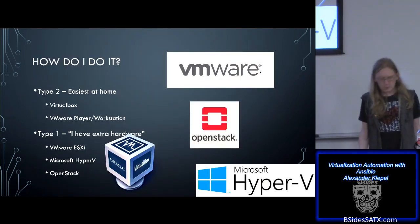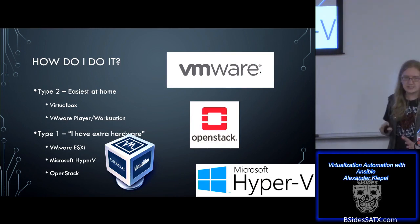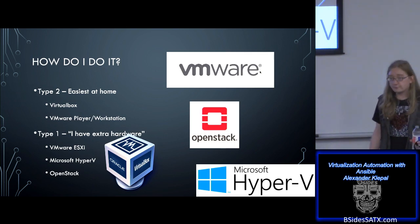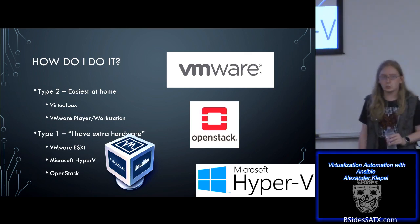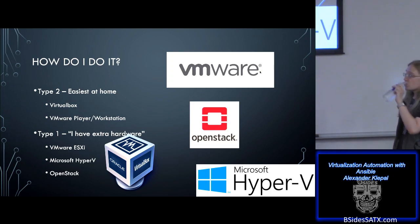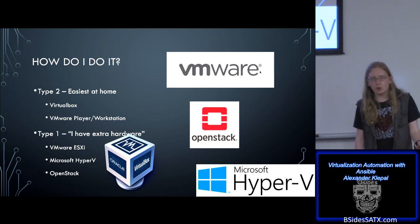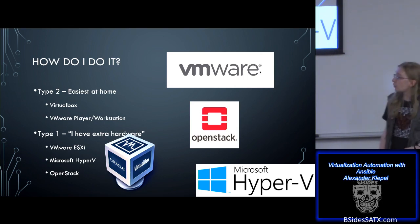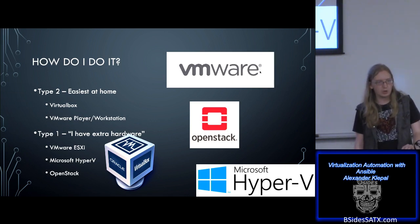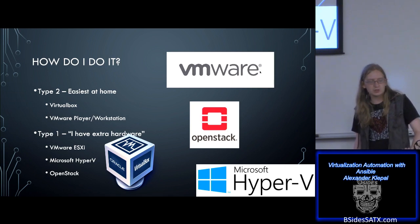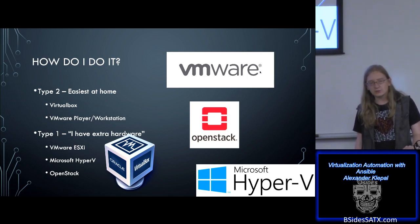So how would you go about doing this? Type two is easiest at home if you don't already have this sort of equipment. You could download VirtualBox for free, VMware Player also for free, or VMware Workstation which is definitely worth the extra money. If you've got extra hardware laying around, my recommendation would be to go for a type one hypervisor. I'm very partial to VMware's ESXi platform, but Microsoft also has Hyper-V, included with Windows Server and Windows 10.